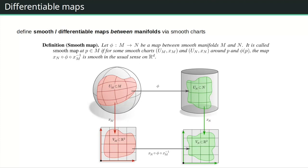For a smooth map phi from manifold M to manifold N: we have smooth charts on both manifolds and we pull back phi into coordinates by composing x_M inverse, phi, then x_N. Phi is smooth if for all choices of charts these coordinate expressions are smooth. So we have a notion of smoothness of functions between two different manifolds.